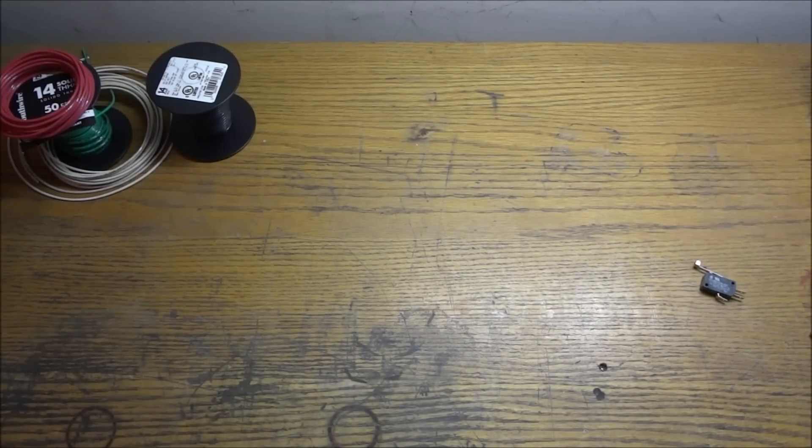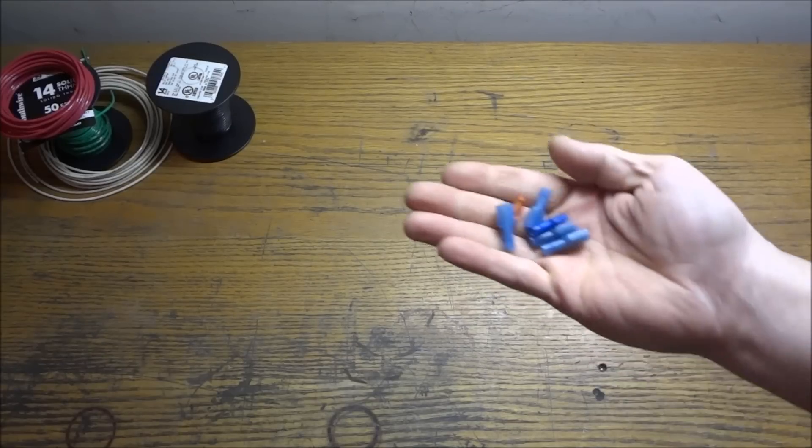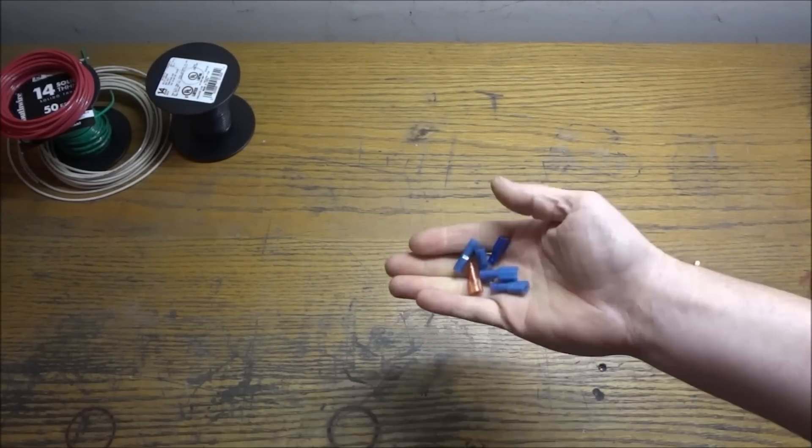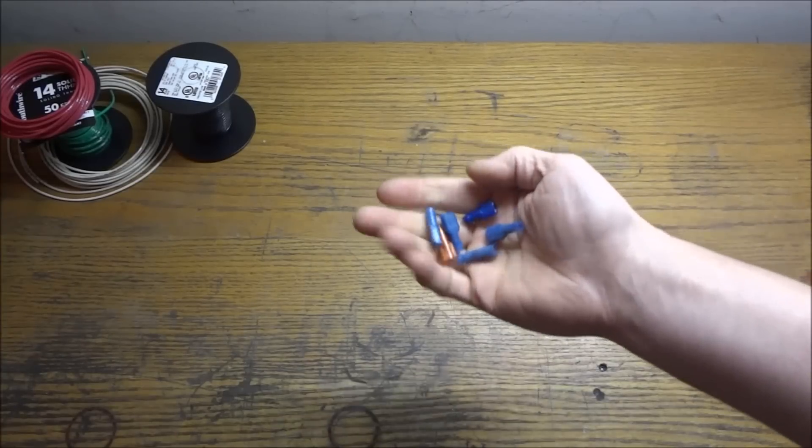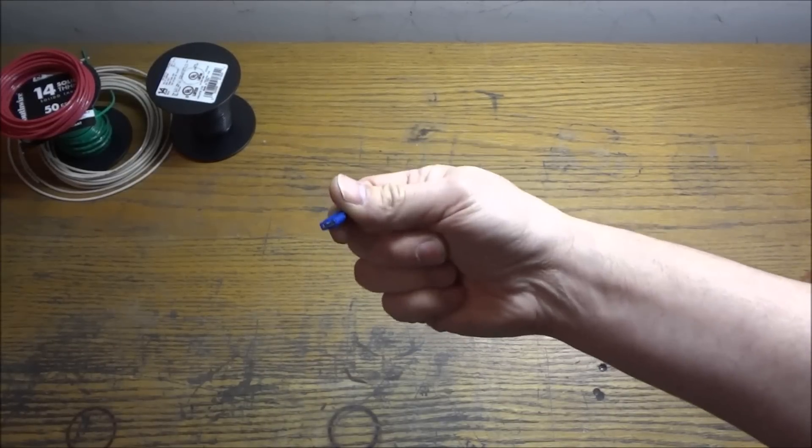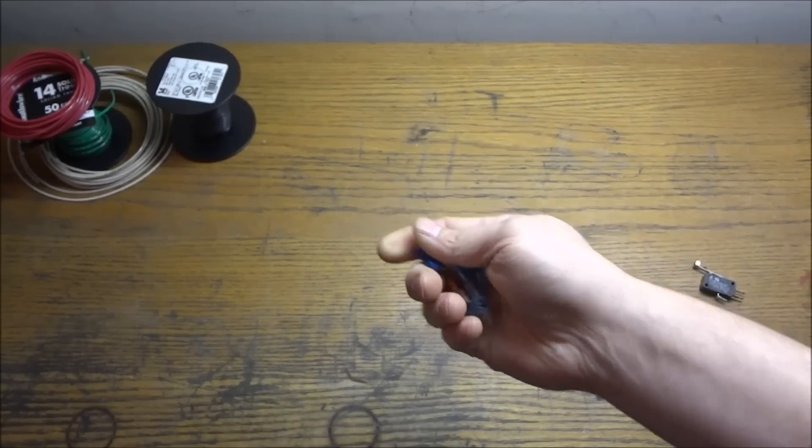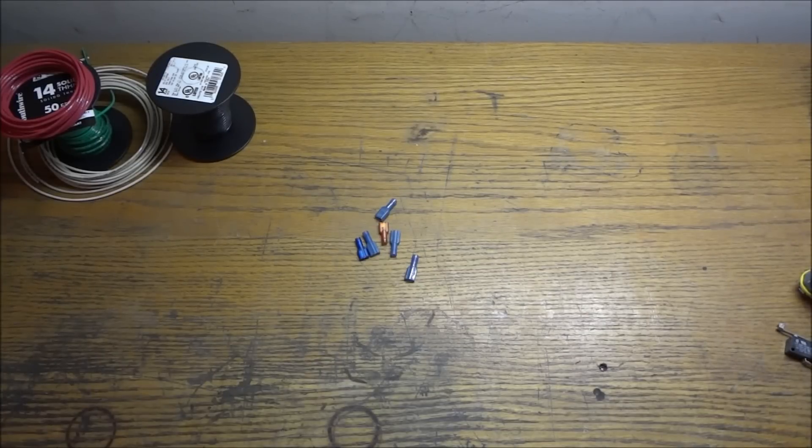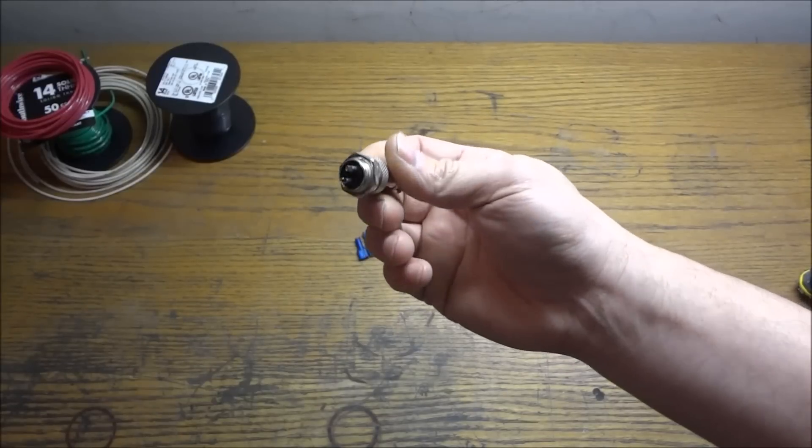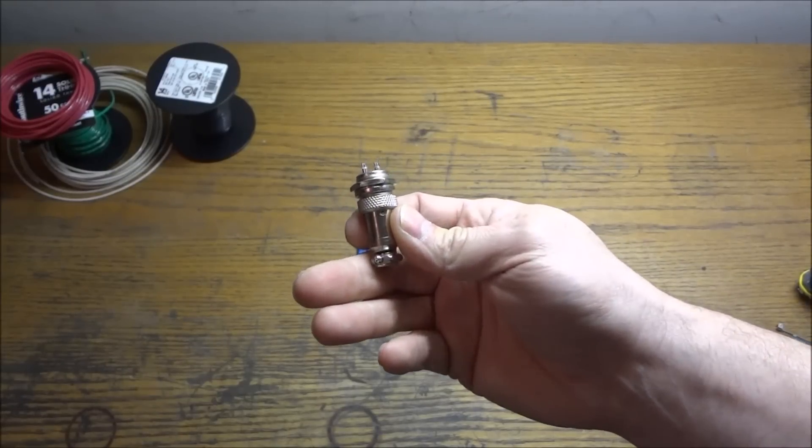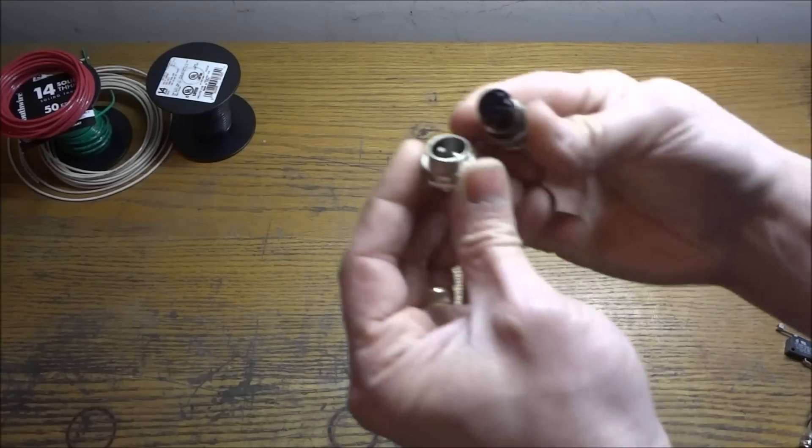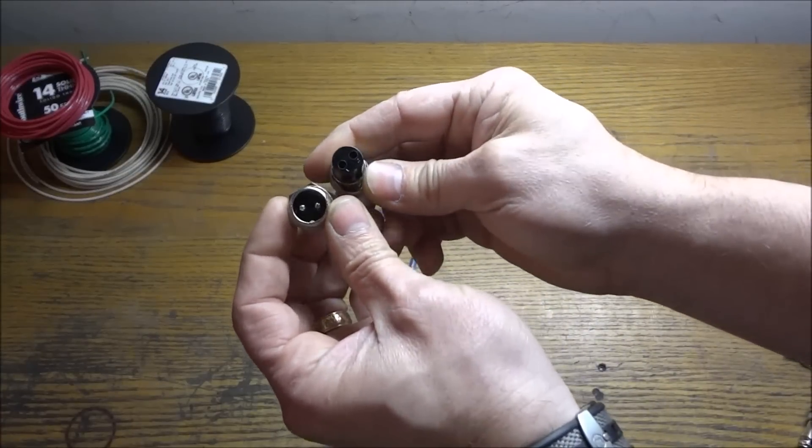Also you may want to pick up some crimp on connectors for the line filter. If your solid state relay has the tabs to slide these on you could use those. Also aviation plugs. These are 16mm that I'm going to be using for my home switches. These are 2 pin. You can find these on eBay.